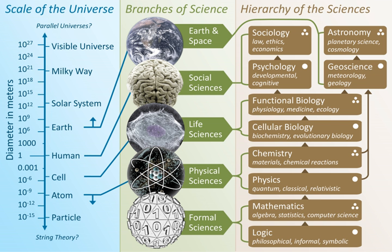Physical science is an encompassing term for the branches of natural science and science that study non-living systems, in contrast to the life sciences. However, the term 'physical' creates an unintended, somewhat arbitrary distinction, since many branches of physical science also study biological phenomena. There is a difference between physical science and physics.